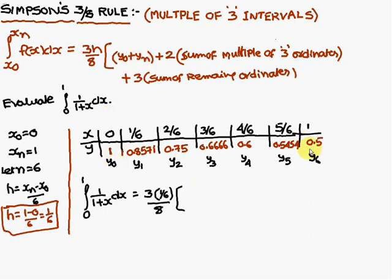First value 1 plus 0.5 plus 2 times sum of multiple of 3 ordinates, multiple of 3 ordinates, you come across with y3 only. y3 is 0.6666, you don't get y6, because first one and the last one, you come across with here, 1 plus 0.5.